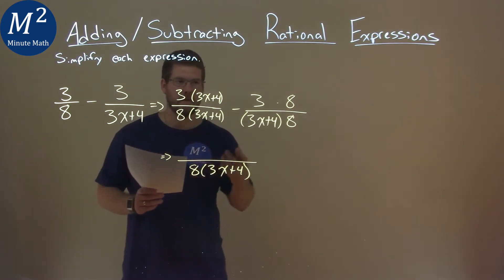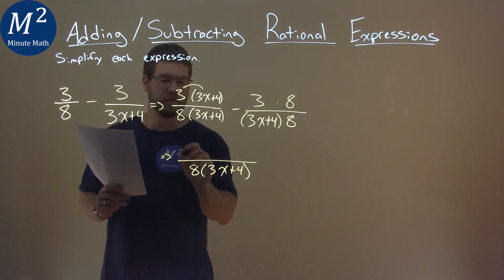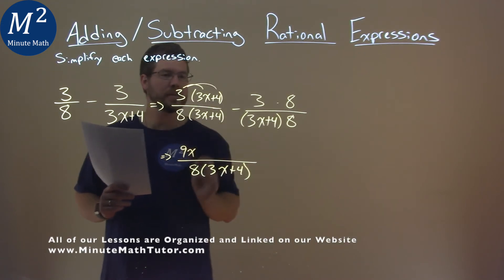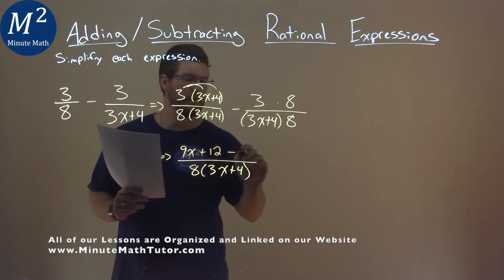And we now can combine the numerator. So let's go do that, 3 times 3x, let's multiply that out as 9x, and 3 times 4 is 12. Subtracted by 3 times 8, 24.